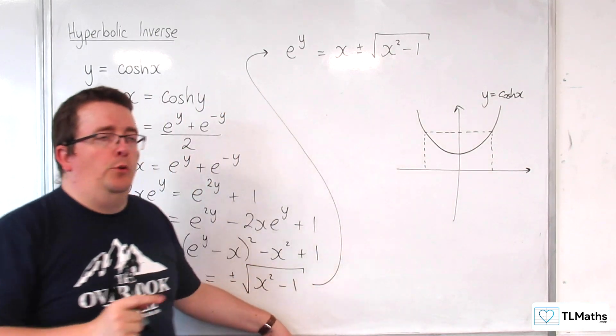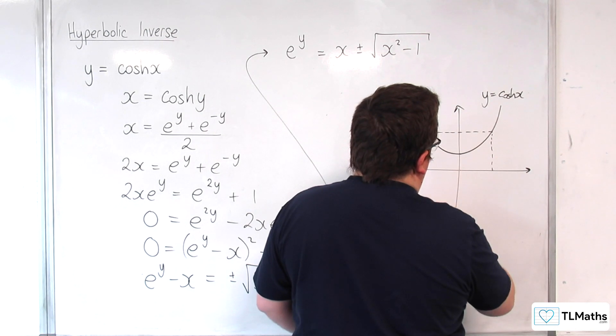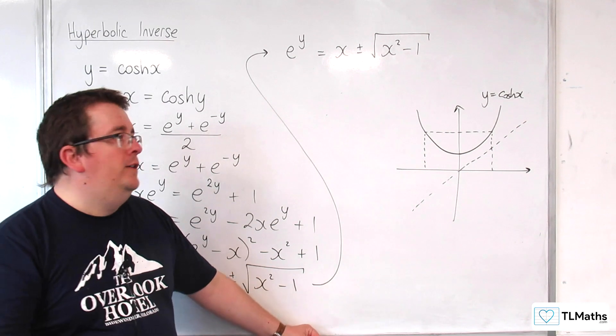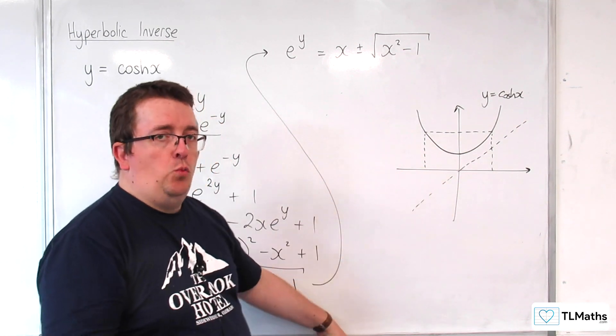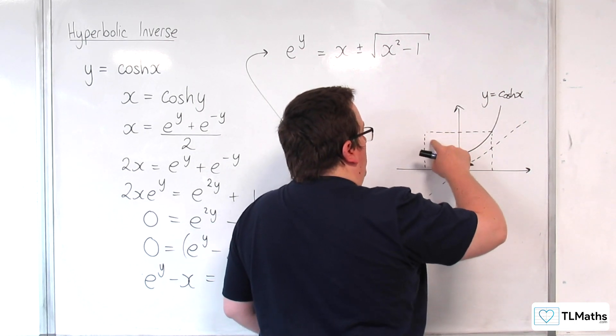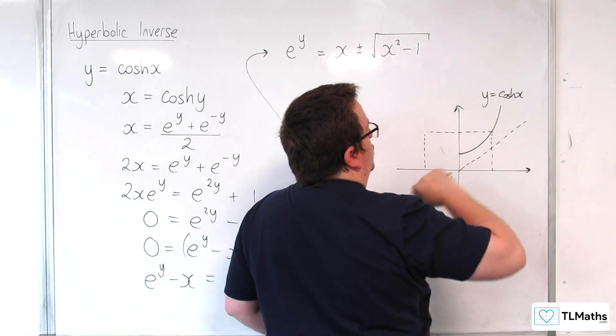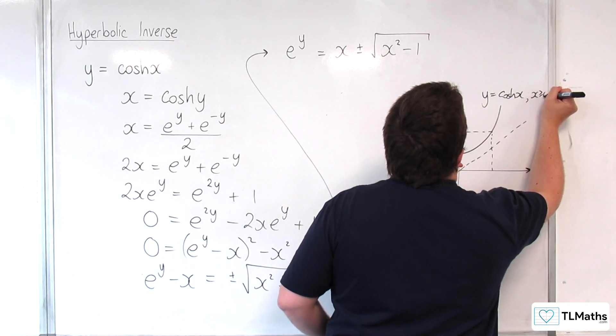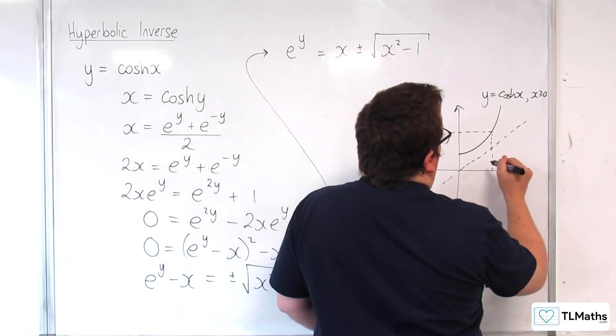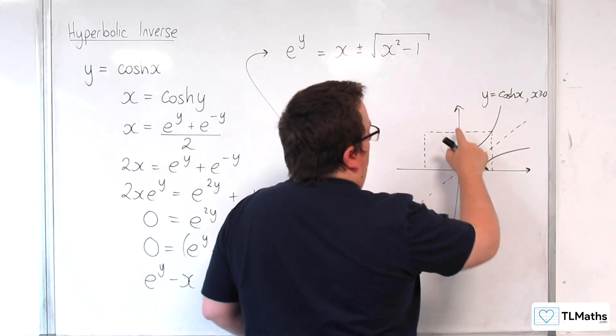But, in order to define the inverse function, what we did, because we've got to reflect it in y equals x, we've got to be working with a one-to-one function, and this is currently many-to-one. So, we scrubbed out half of the graph, and defined cosh x to have x being greater than or equal to 0. We restricted the domain so that we could write down an inverse function like so.